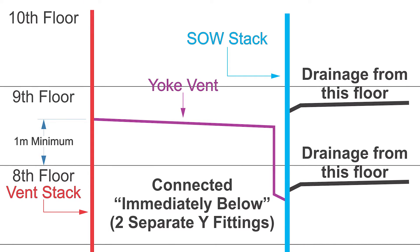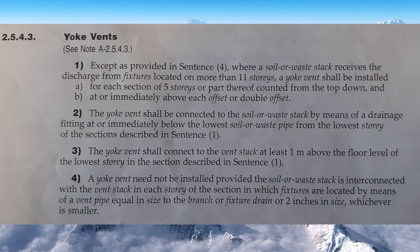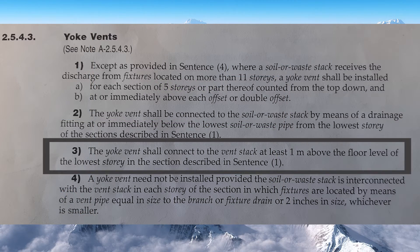I can also connect immediately below. If I look at this picture, the Yolk Vent is coming off just below the drainage connection, so I have two separate Y's that are joined one above the other.